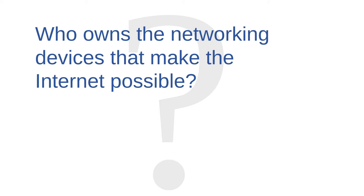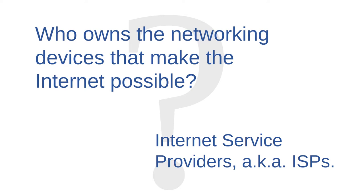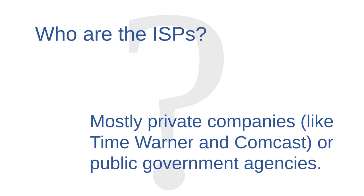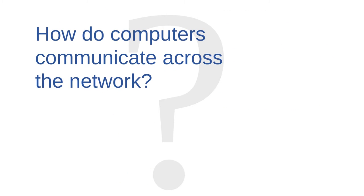One is: who owns the networking devices that make the internet possible, and who is responsible for fixing them when they break? The short answer is that organizations called internet service providers, or ISPs, own and maintain the physical networking cables and networking devices that facilitate the internet. And who are the internet service providers? They are mostly big private companies, such as Time Warner or Comcast, while some others are government agencies.